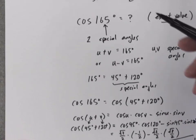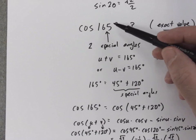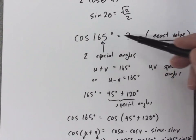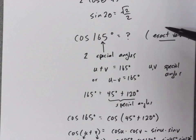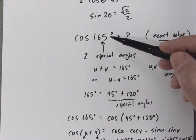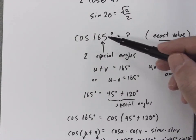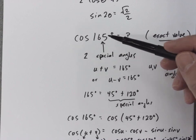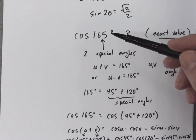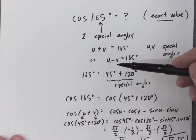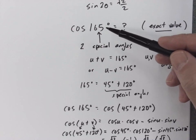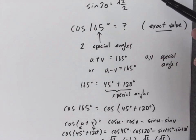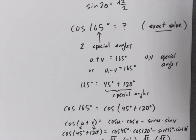So that's the idea: when asked to find a trig function of an angle that's not a special angle and we need the exact value, the key is to find two special angles that we can add or subtract to equal our initial angle, then use the formulas to solve.